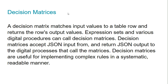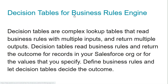Decision matrices match input values to a table and return rows. Input value expression sets and various digital procedures can call decision matrices. Decision matrices accept JSON input and return JSON output, and are useful for implementing complex rules in a systematic, readable manner.